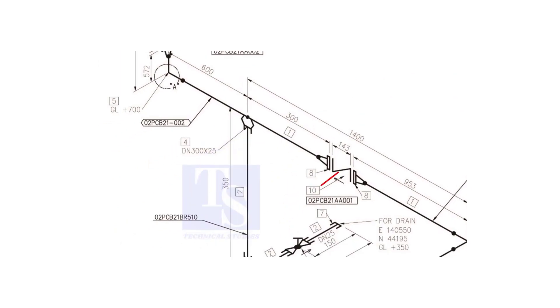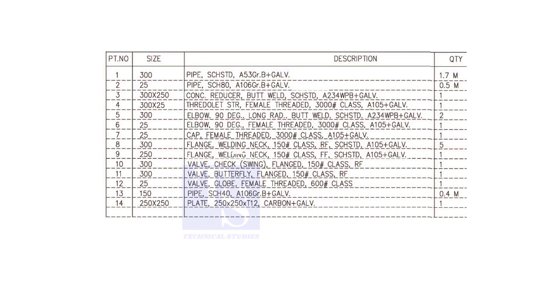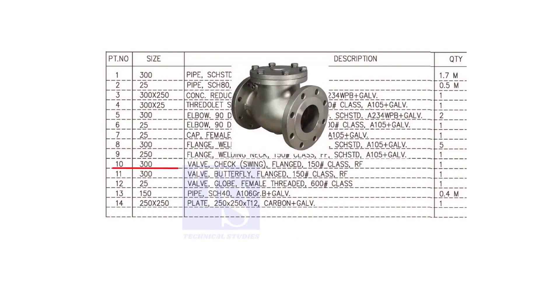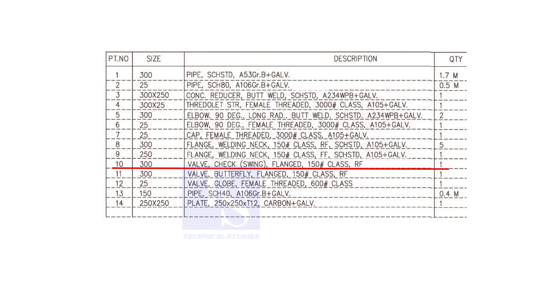Item number 10 is a 300 NB flange check valve. The rating is 150 and it is raised face.